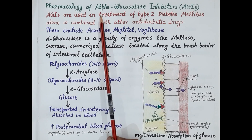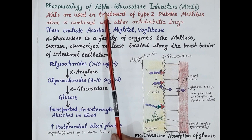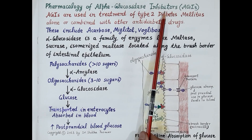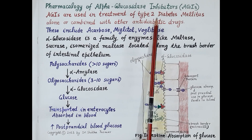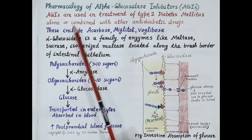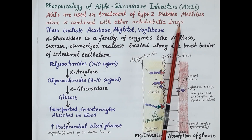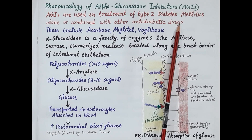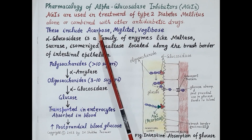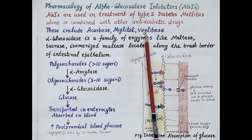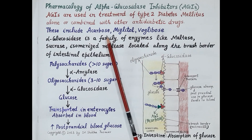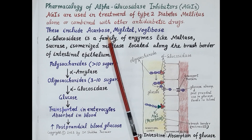Hello students. In today's video we are going to discuss pharmacology of alpha-glucosidase inhibitors. Alpha-glucosidase inhibitors are used in the treatment of type 2 diabetes mellitus, either alone or usually combined with other anti-diabetic drugs. This category of oral anti-diabetic drugs includes drugs like acarbose, miglitol, and voglibose. Acarbose is the most commonly and widely used alpha-glucosidase inhibitor, and in this video we are going to study its pharmacology.